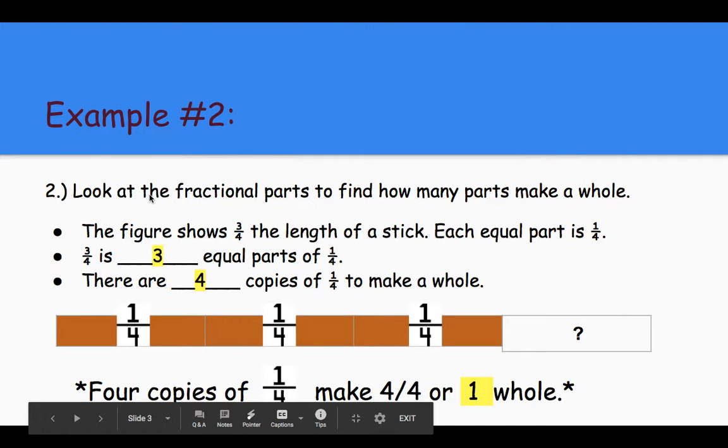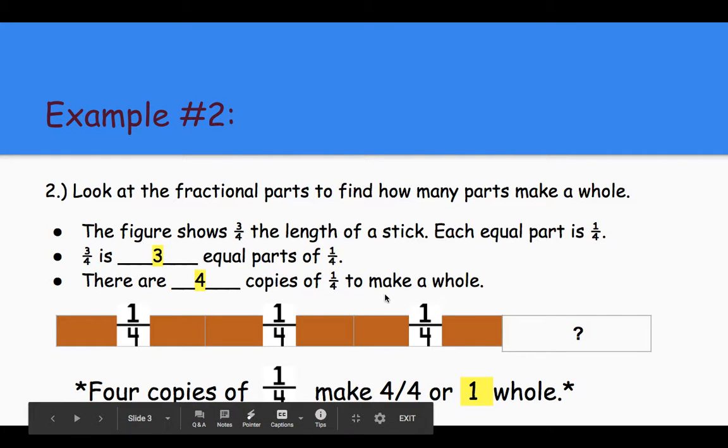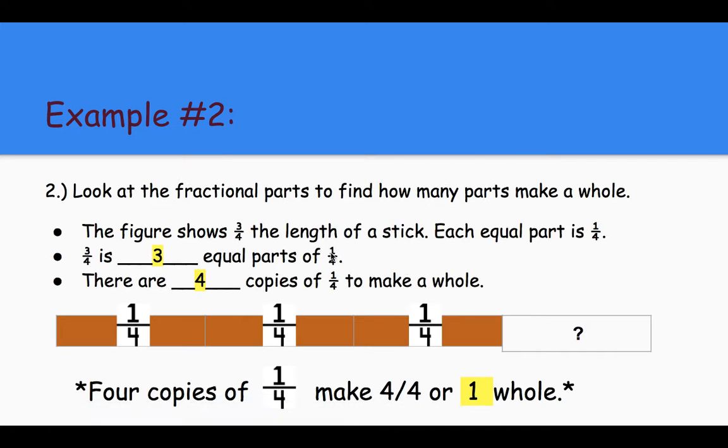Example number two. Look at the fractional parts to find how many parts make a whole. So we're going to look at this diagram right here. So the figure shows three-fourths the length of a stick, right? We know we have three one-quarters. Each equal part is one-fourth, right? We know that. Three-fourths is three equal parts of one-fourth, right? So three-fourths, which is what's shown here, is three equal parts of one-fourth.